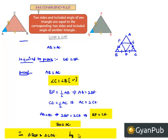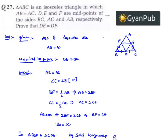By SAS property of congruency, we can say that triangle BDF is congruent to triangle CDE.